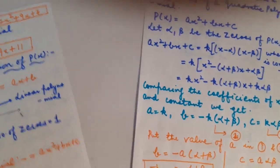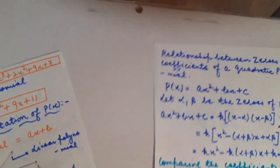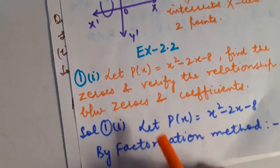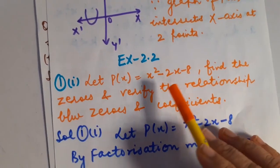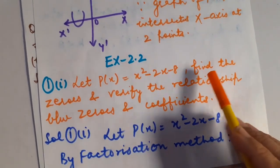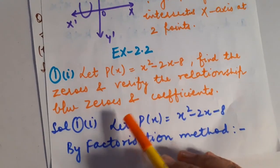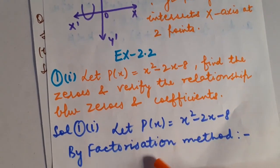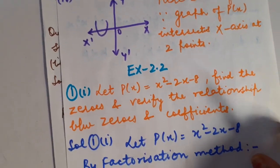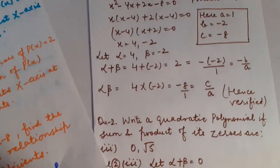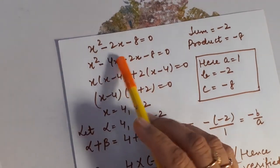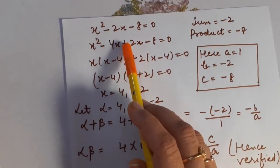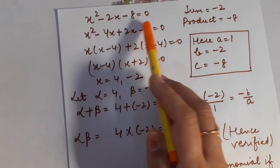Now I am going to take questions from exercise 2.2. First question: let P(x) = x² − 2x − 8. We have to calculate the zeros and then verify the relation between the zeros and the coefficients. Using the factorization method: x² − 2x − 8 = 0. Factorizing — sum should be minus 2 and product should be minus 8 — gives x² − 4x + 2x − 8.